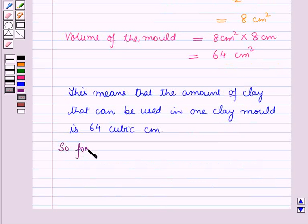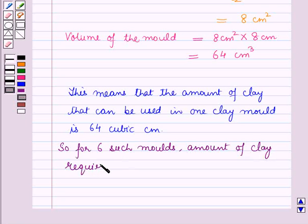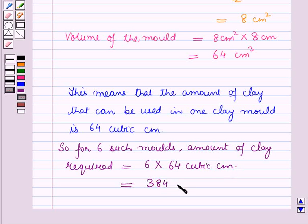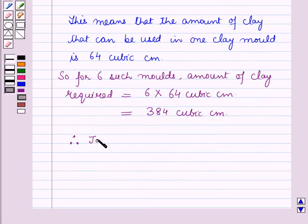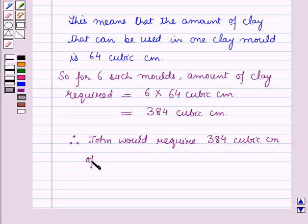For 6 such molds, the amount of clay required will be equal to 6 into the amount of clay required for one mold, which is 64 cm³. So this is equal to 384 cm³ of clay. This is the solution of the given question, and that's all for this session. Hope you all have enjoyed the session.